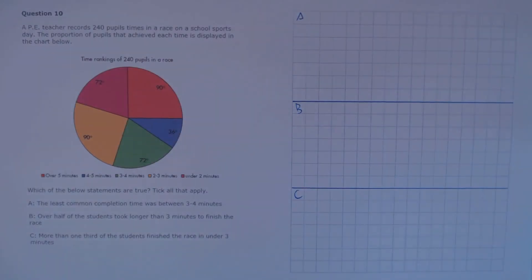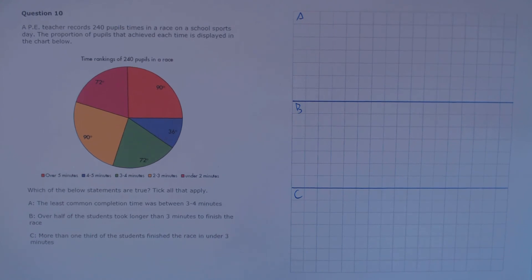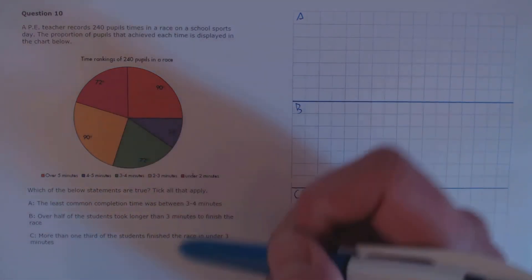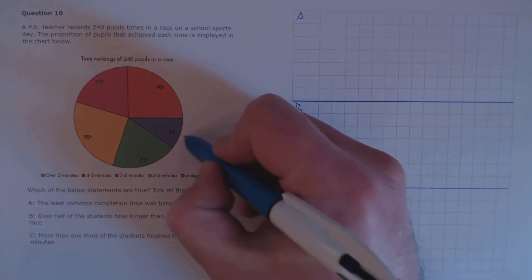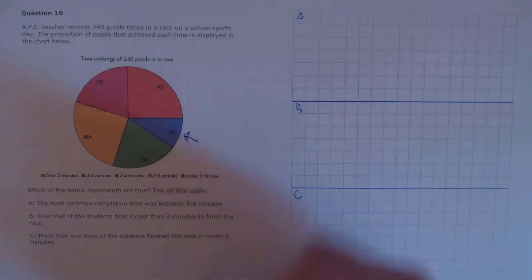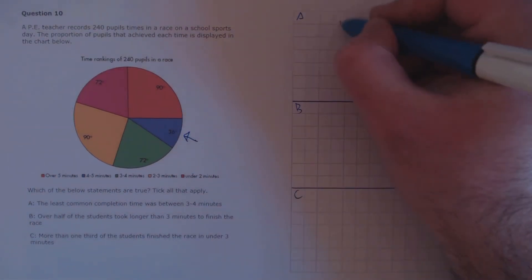Question 10. A PE teacher records 240 pupils' times in a race on a school sports day. The proportion of pupils that achieved each time is displayed in the chart below. Which of the below statements are true? A: the least common completion time was between three and four minutes. The least common completion time on a pie chart would be the smallest slice, which is four to five minutes — so that's false.